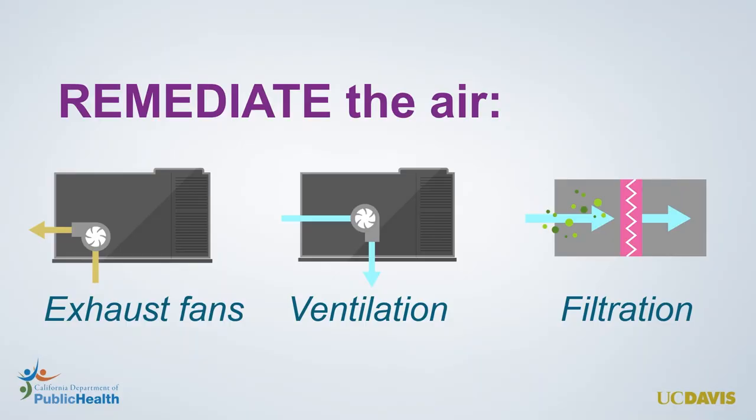Removing and reducing are great ways to decrease the amount of pollutants in our indoor air, but quite often to have good indoor air quality, we need the third R: remediation. Remediation is a fancy way of saying that we're going to improve the air quality. For example, when we clean with chemical products, even if they're low VOC, they'll still release some chemicals into the air.